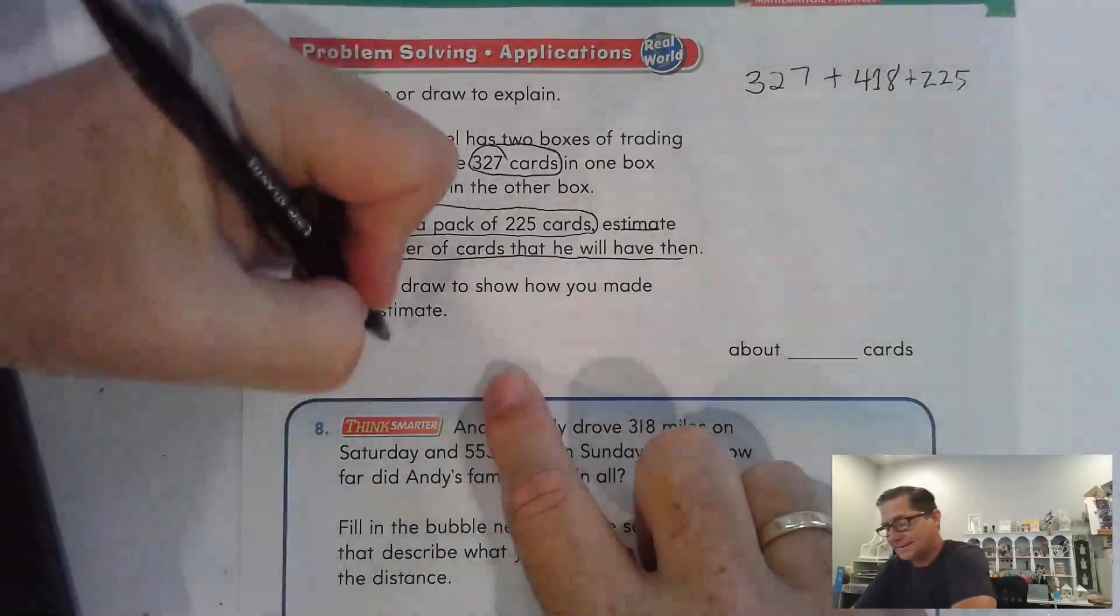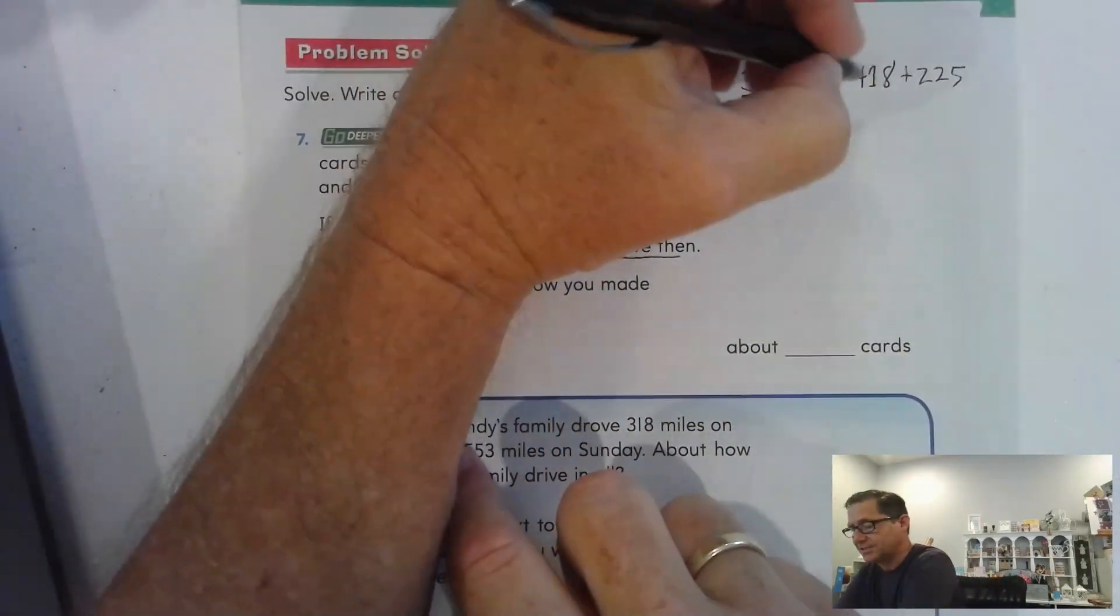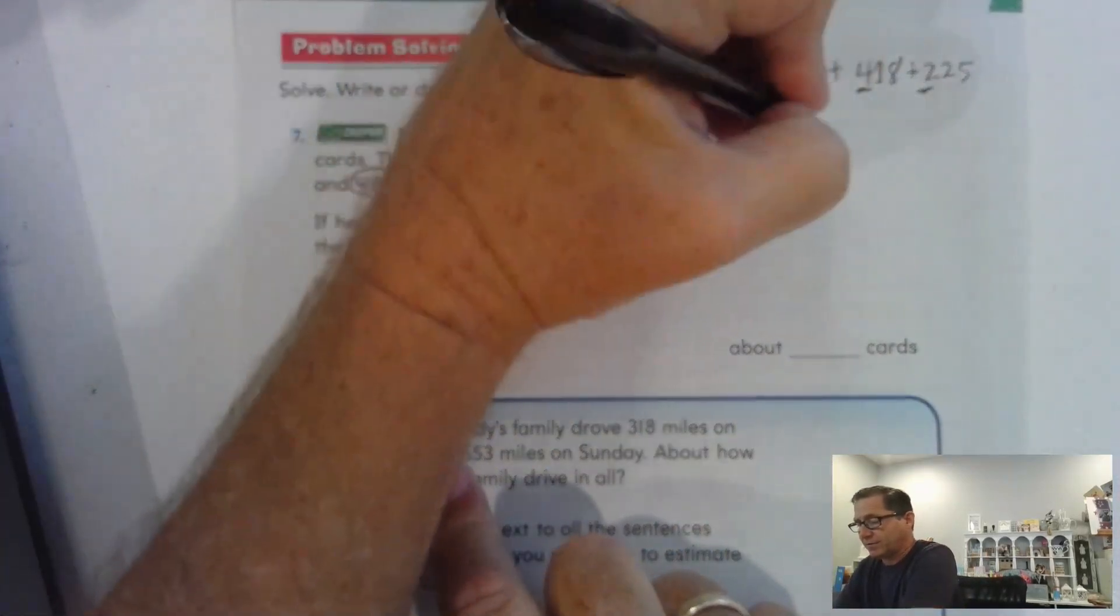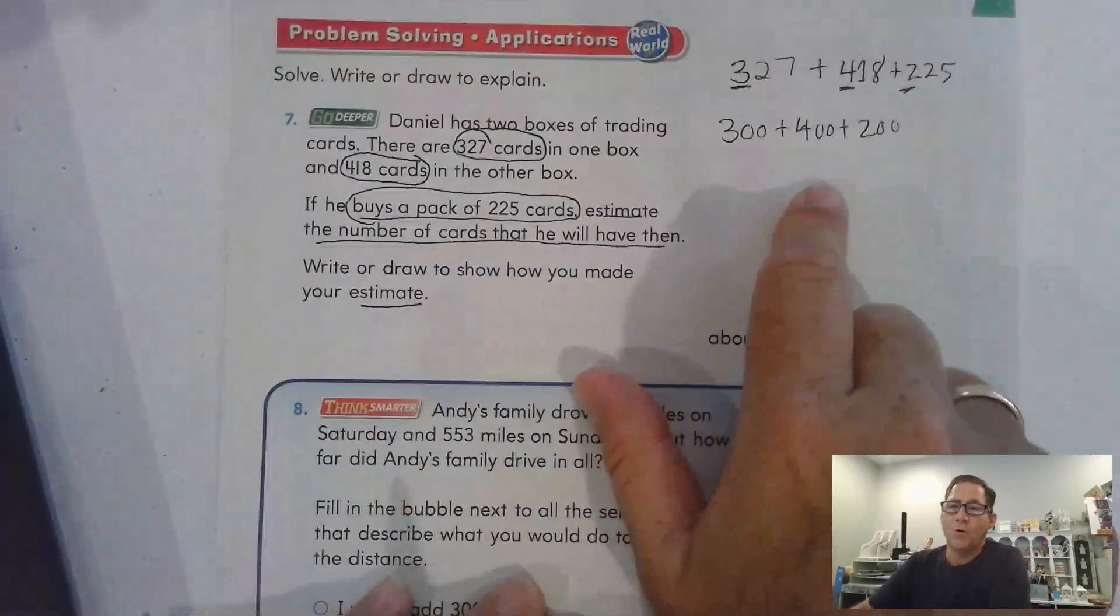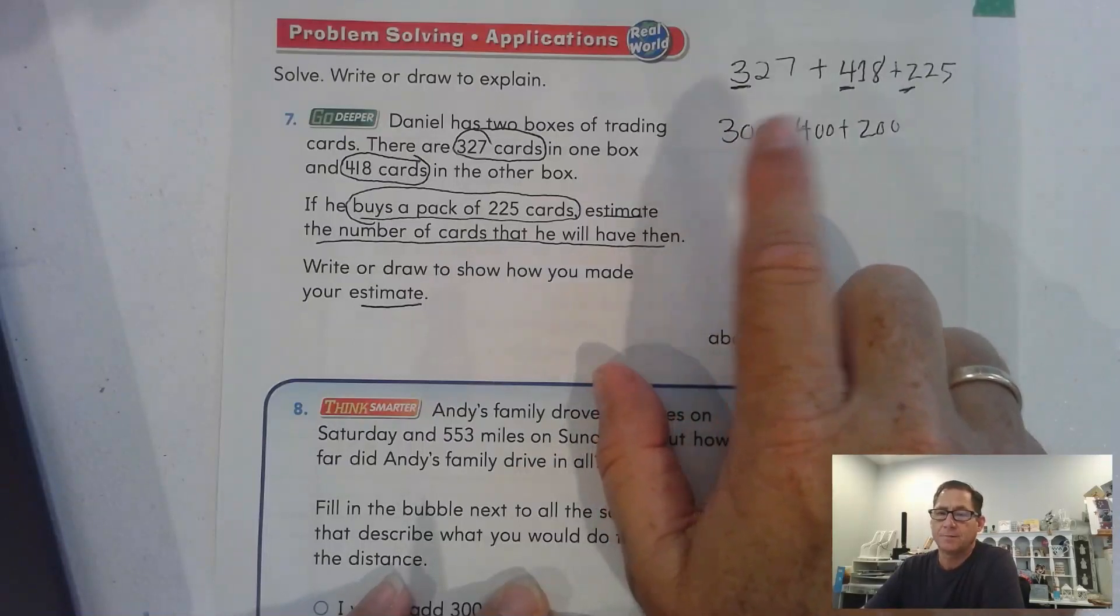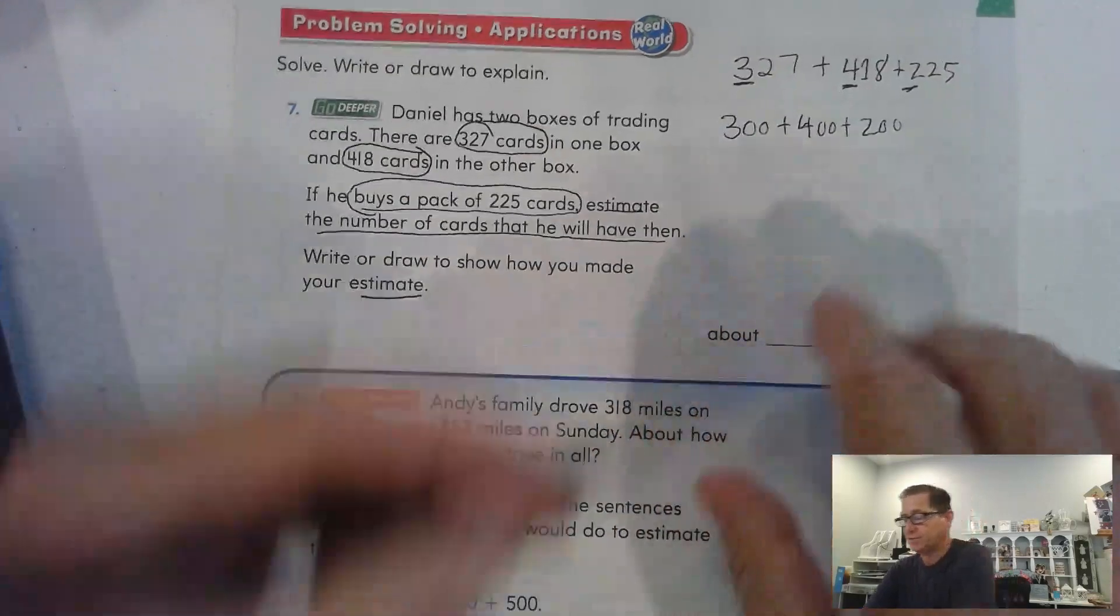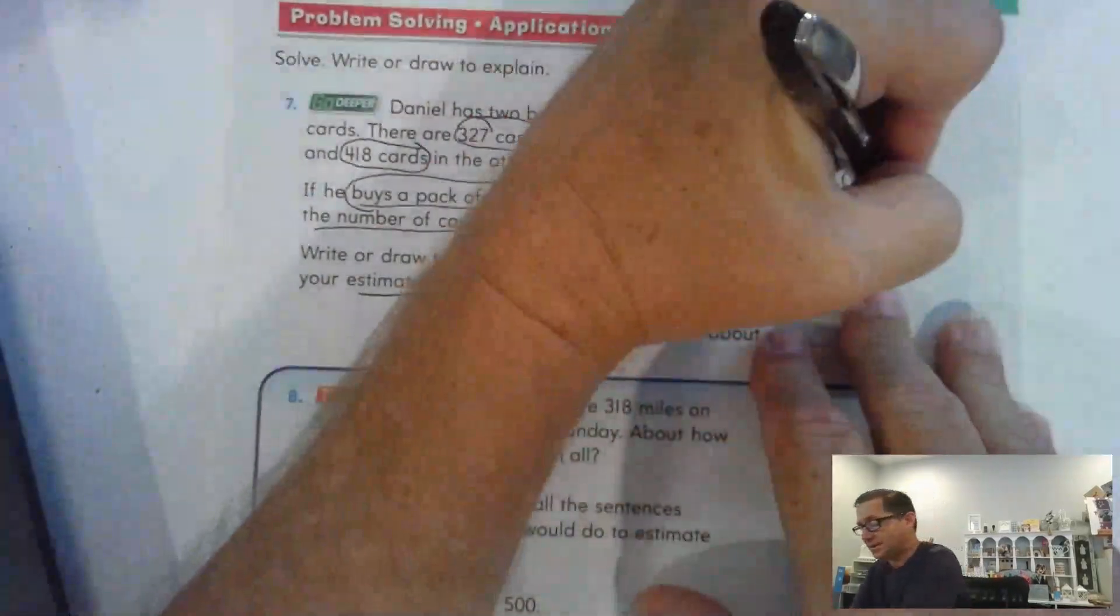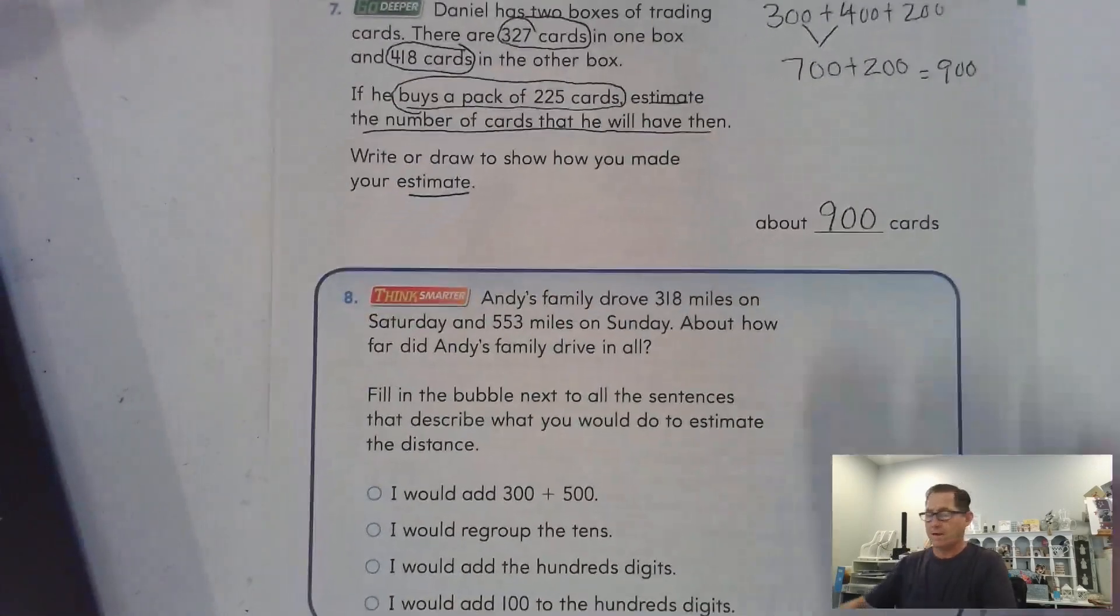So, we have to add 327 plus 418 plus 225. But, it says about. So, we want an estimate, right? It says estimate the number of cards. Alright. Well, let's just look at the hundreds digit in each number. So, 300 plus 400 plus 200. Alright. Well, what's 400 plus 300? Well, 4 plus 3 is just 7, right? So, 700. What's 700 plus 200? That's 900. So, he's going to have about 900 cards after he purchases the 225.